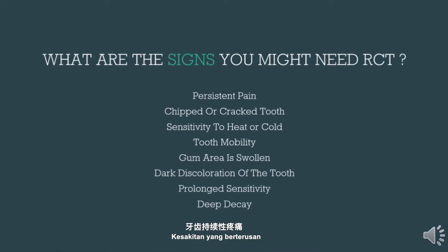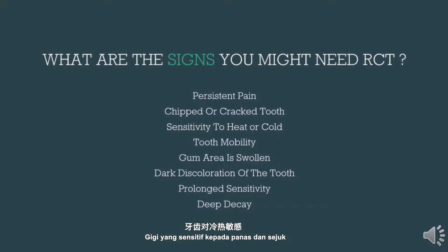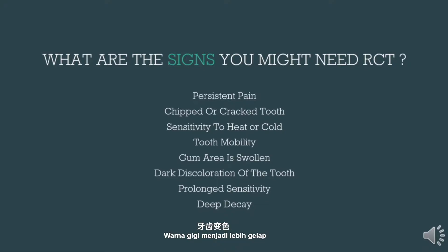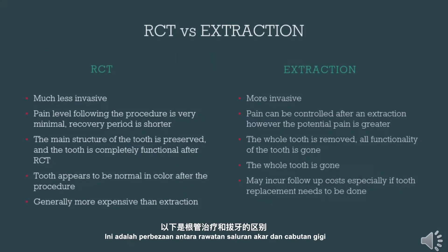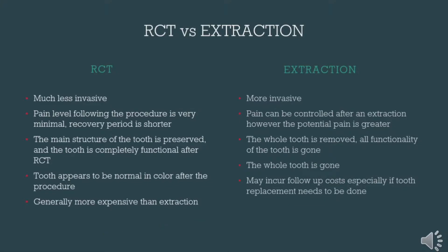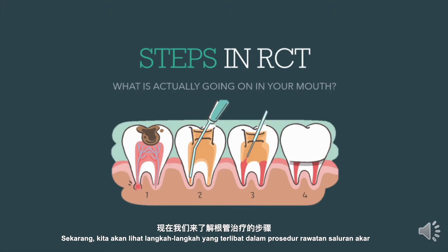Signs you might need RCT include: persistent pain, chipped or cracked tooth, sensitivity to heat or cold, tooth mobility, swollen gum area, dark discoloration of the tooth, prolonged sensitivity, and deep decay. These are the differences between RCT and extraction. We will now be looking into the steps in RCT.